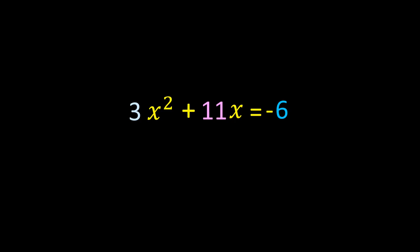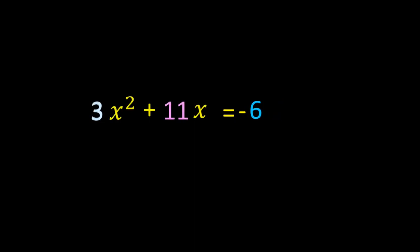Now, divide the equation by 3. After dividing the equation by 3, we are left with x² + (11/3)x = -6/3.